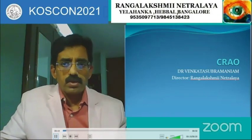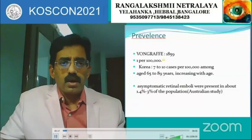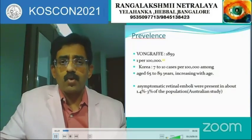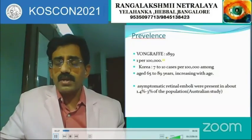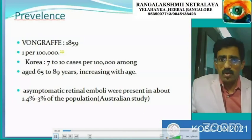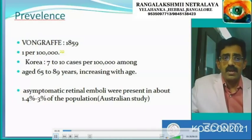Thank you for that comprehensive review of vasculitis and its workup. The next talk is from Dr. Venkat on the present management of central retinal artery occlusion. CRAO prevalence is approximately 1 per 100,000, though it may be as high as 7–10 per 100,000 with increasing age, first detected in 1859. Interestingly, one study showed 1.4–3% of the population having asymptomatic retinal emboli.